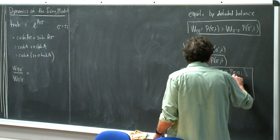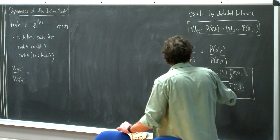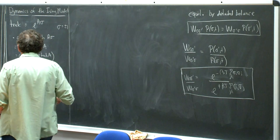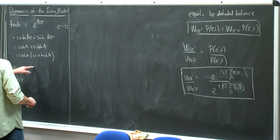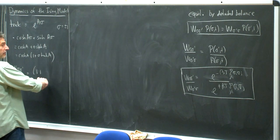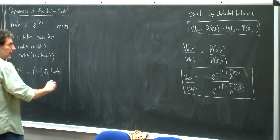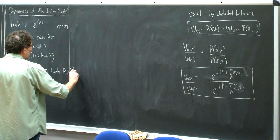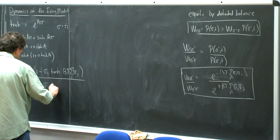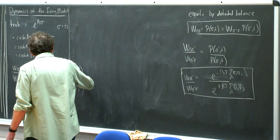To analyze ṁ = -m + tanh(βm), we plot ṁ as a function of m. Without the tanh term (β=0, infinite temperature), we just have ṁ = -m, a straight line through the origin — m=0 is a stable fixed point. For β less than a critical value βc, m=0 remains stable. For β greater than βc, the tanh has a steeper slope near the origin than the line, making m=0 unstable with two new stable fixed points at ±m_eq appearing.